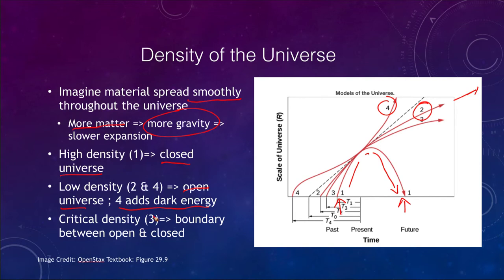The critical density, number three, is the boundary. This is the edge, the limit where it just barely expands forever. It will never quite come to a stop. This one easily expands forever. Anything less than this would eventually turn around and collapse back down. This is the boundary right between the two, which is what we call the critical density.